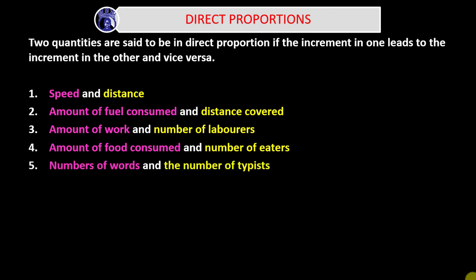Number five: number of words and the number of typists — the higher the number of typists, the more words they will be typing. Number six: weight and mass. In physics, the higher the weight, the higher the mass, or the lower the weight, the lower the mass. Number seven: density and mass. Density increases as mass also increases, and as density reduces, mass can also be said to have reduced in certain situations.